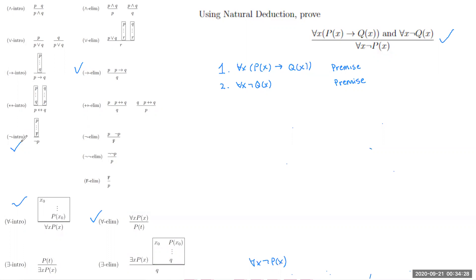So let's start off the proof. We want to have a for-all statement at the end, so we'll do a ∀-intro by starting with some arbitrary element. We'll introduce an arbitrary x₀, which also lets us apply ∀-elim on lines one and two.